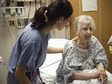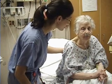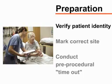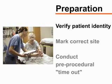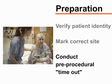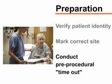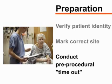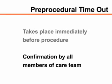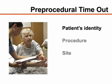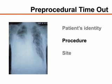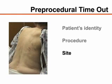Explain the procedure to the patient and obtain written informed consent. You should also verify the patient's identity, mark the correct site, and conduct a pre-procedural timeout. The timeout, which takes place immediately before the procedure is started, consists of confirmation by all members of the care team that the patient's identity, the procedure he or she is to undergo, and the site of the procedure are all correct.